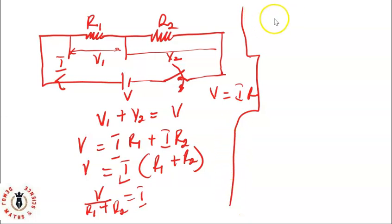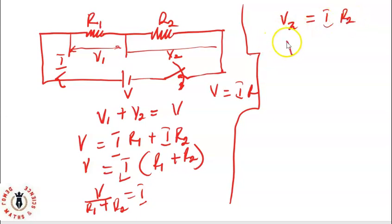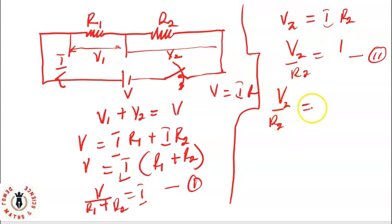Since it's a series circuit, the same current I flows throughout. The voltage across R2, which is V2, equals IR2, so V2 divided by R2 equals I. Calling the first expression equation one and the second equation two — both equal I — we can equate them: V2 over R2 equals V over (R1 plus R2).